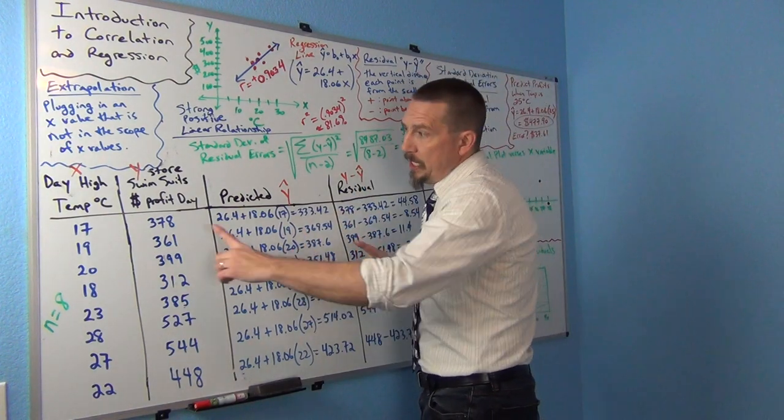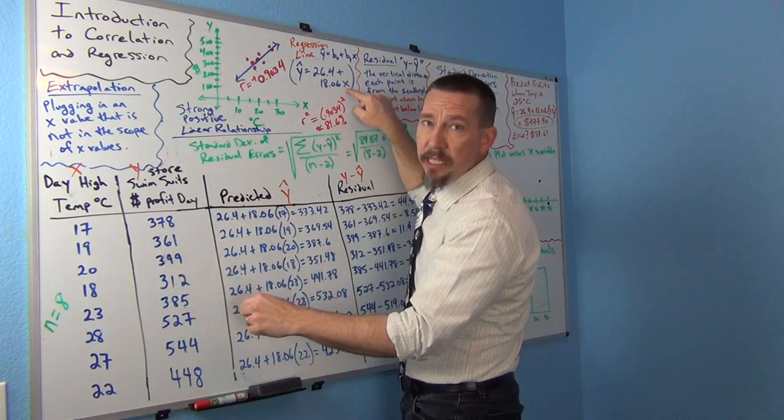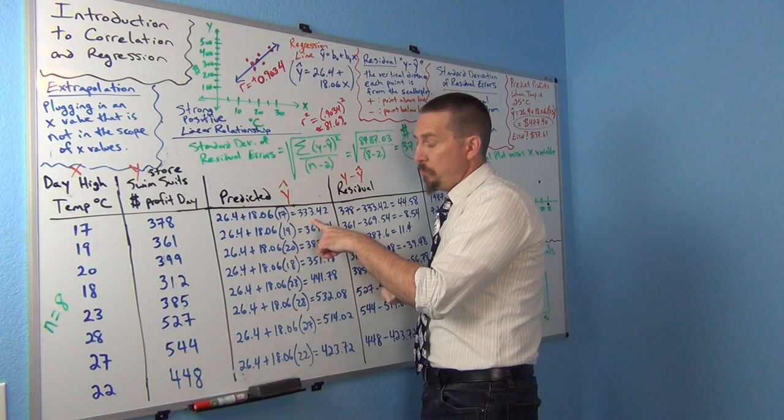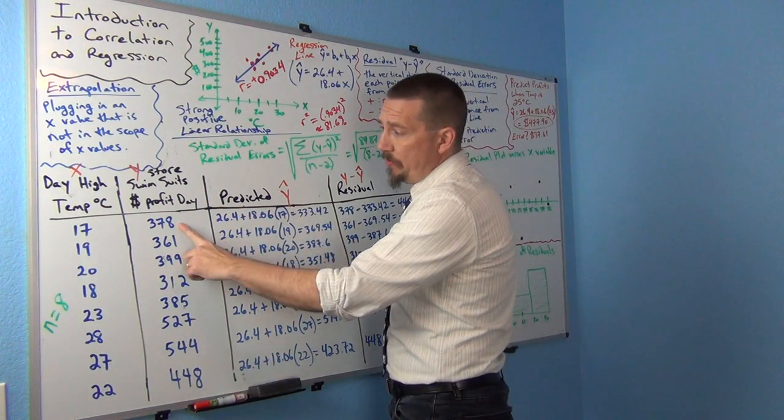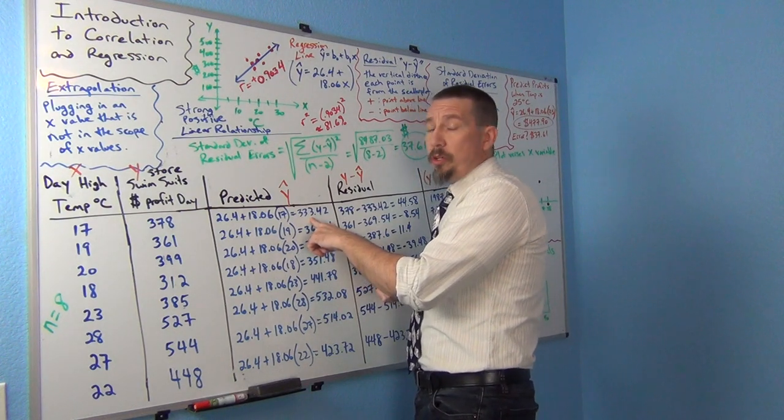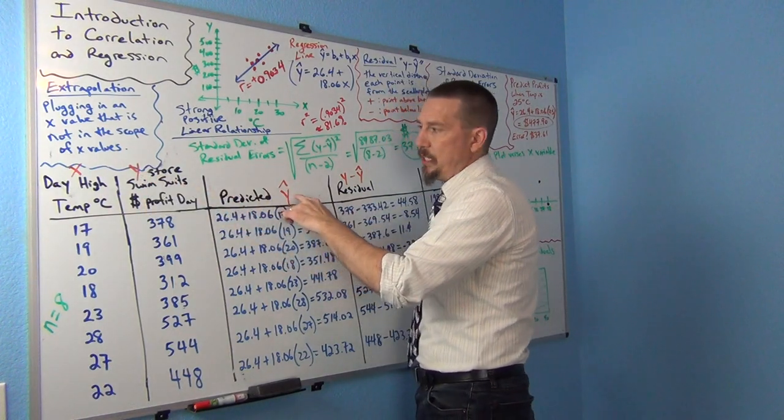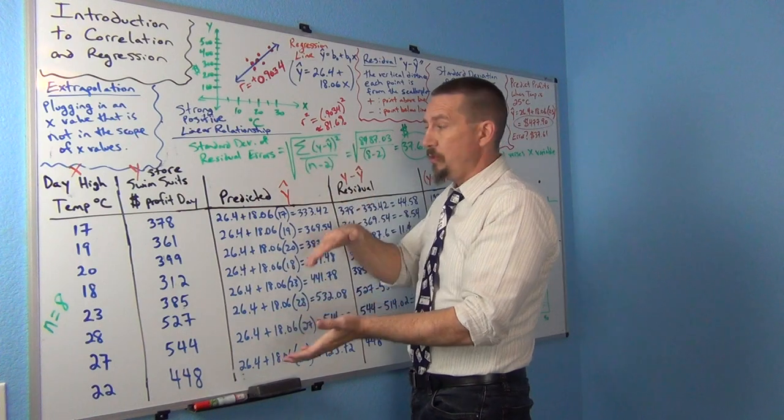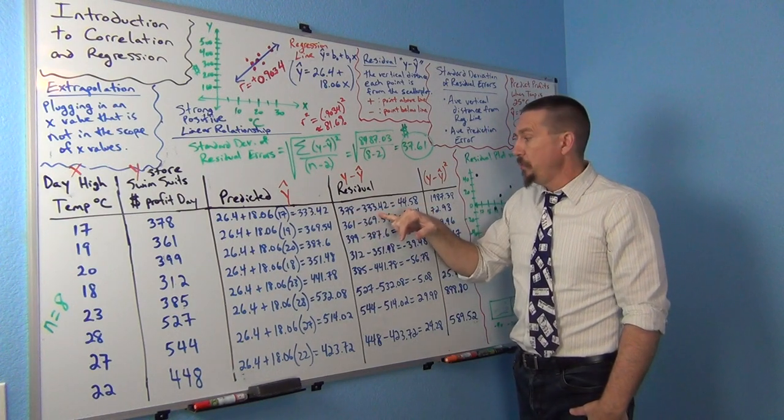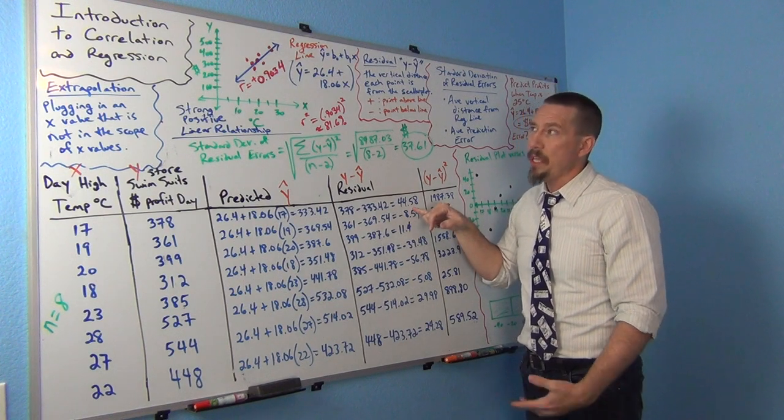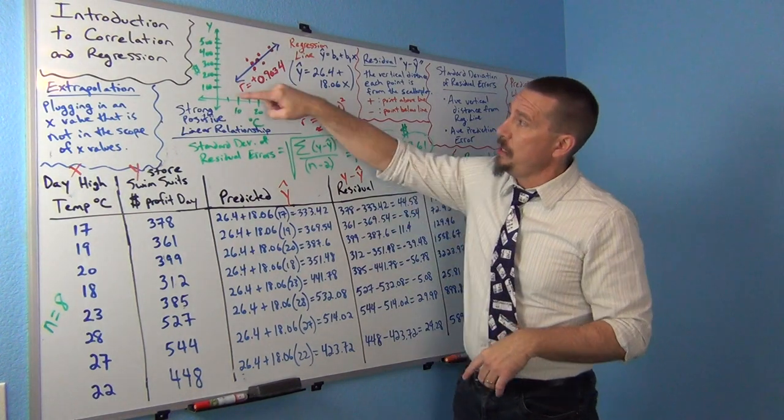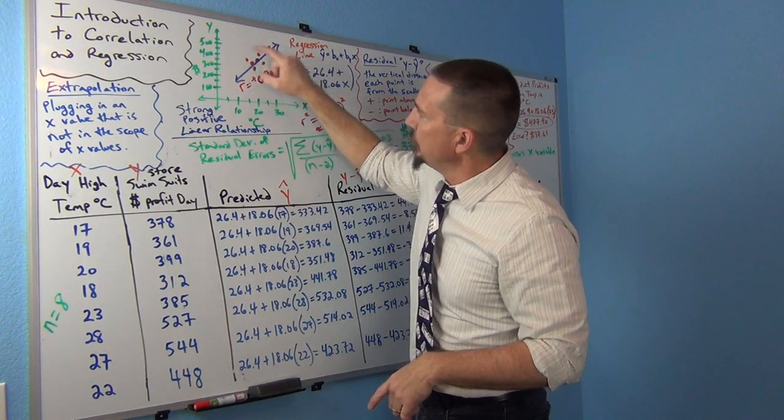So what I'm doing is, my regression line was 26.4 plus 18.06X. Remember from last time, 26.4 was the Y intercept and 18.06 was the slope. Last time I showed you how those were calculated. So now what I'm doing is, I'm plugging in the X value, 17, into that formula. I'm replacing the X with 17, and I'm working it out. And I get a predicted Y value of 338.42. So my actual Y value was 378. My predicted Y value was 333.42. To get the residual, I subtract the actual Y value minus the predicted. And that's going to give me the vertical distance. So 378 minus 333.42 gives me a residual of positive 44.58. In other words, that point is 44.58 dollars above the line.